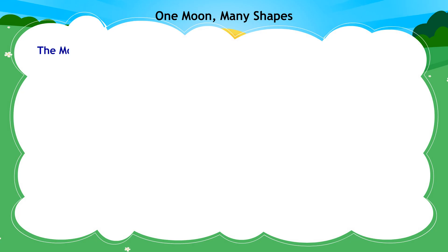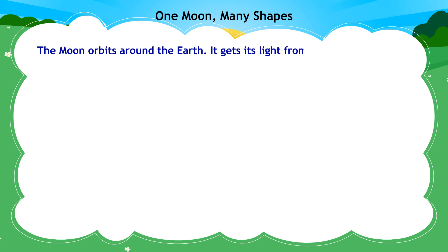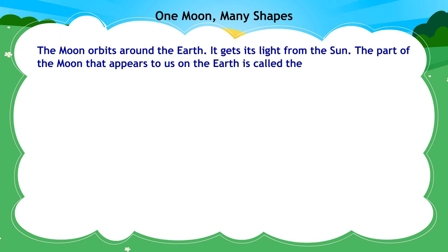The moon orbits around the earth. It gets its light from the sun. The part of the moon that appears to us on the earth is called the phase of the moon.